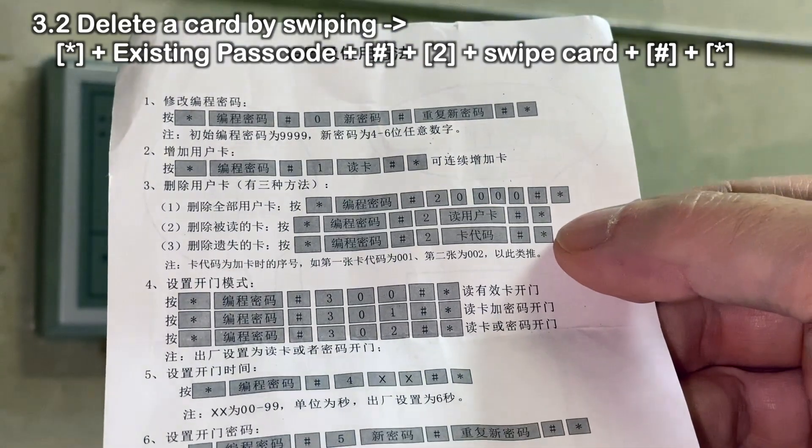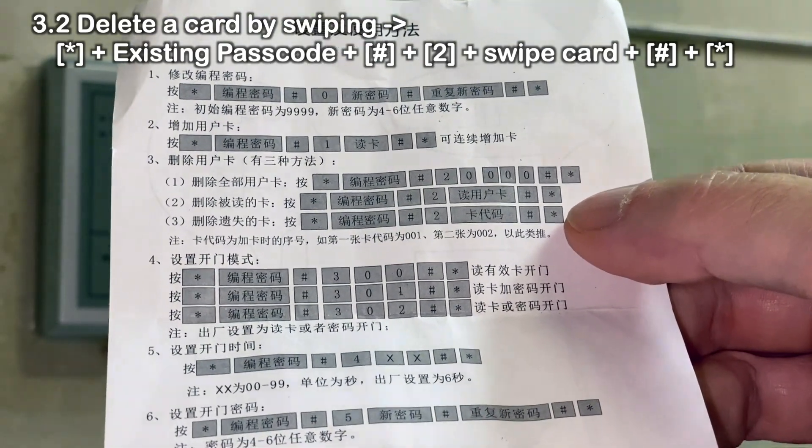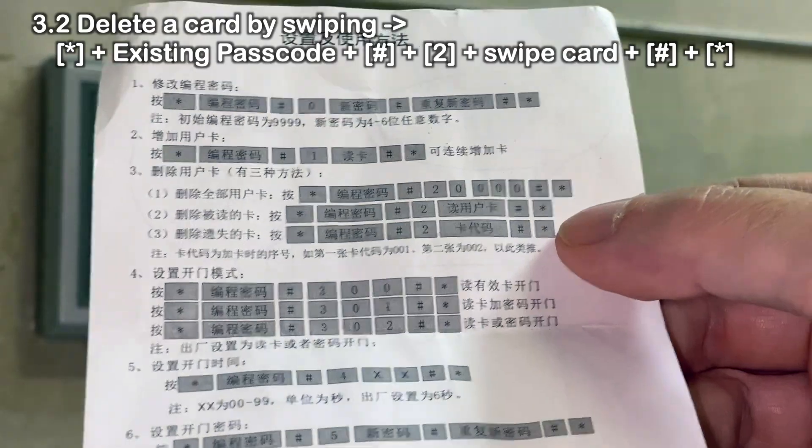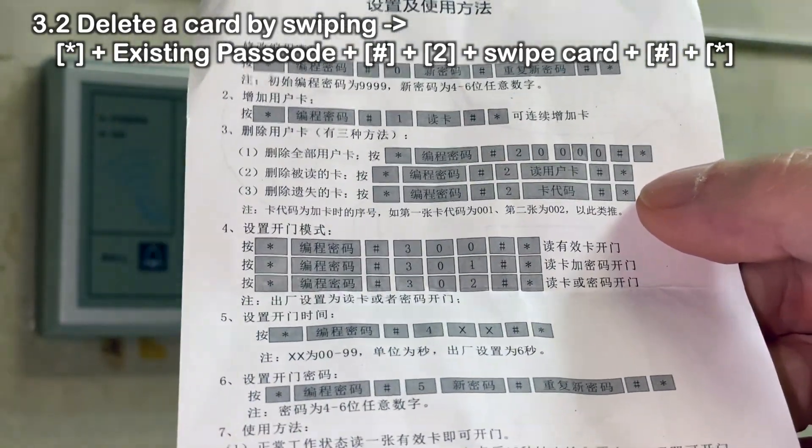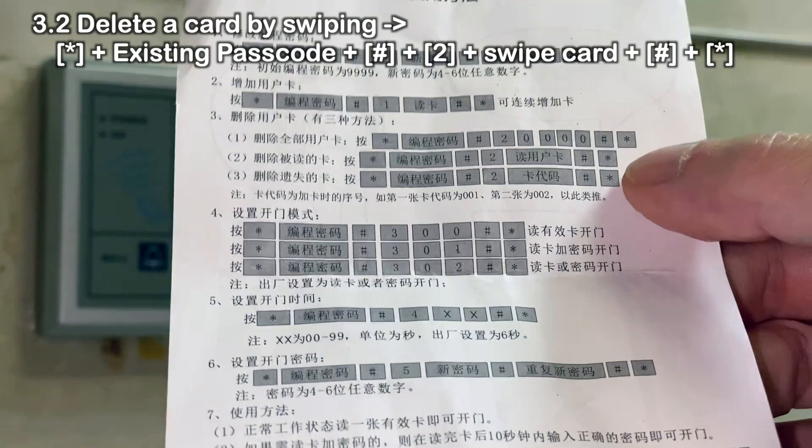The second one, if I'm reading this correctly, is to remove a card that you can scan. So basically if one of your employees is leaving or whatever and he's returning the card, you can just basically deactivate it. So if you have the card with you, you can then swipe it and remove it doing this function.